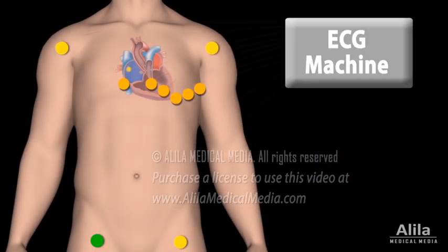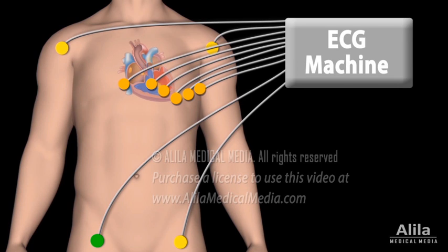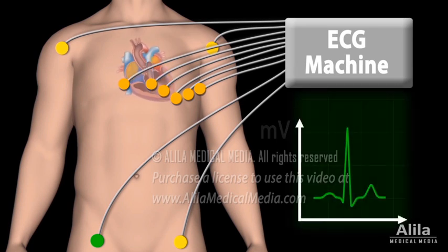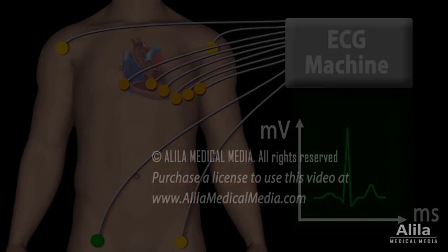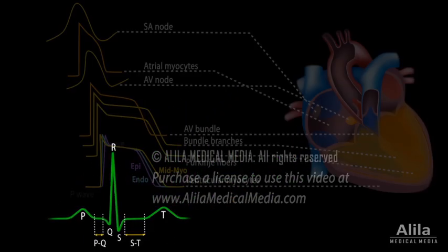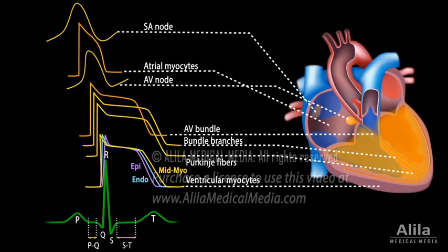Electrical activities of the heart as a whole can be recorded in the form of a surface electrocardiogram, or ECG/EKG. An ECG is a composite recording of all the action potentials produced by the cells of the heart. Each wave or segment of the ECG corresponds to a certain event of the cardiac electrical cycle.